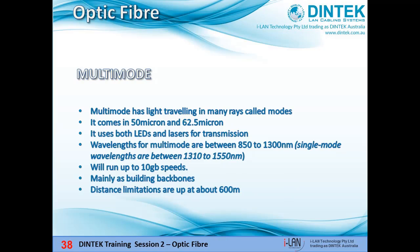Multi-mode fibre has light travelling in the core in many rays called modes — hence multi-mode. It has a bigger core than single-mode and is used with LED and laser light sources with shorter light wavelengths of between 850 and 1300 nanometres for slower local area networks — so it's not always lasers with optic fibre, LEDs are used as well. Multi-mode optical fibre is mostly used for communication over shorter distances, such as within a building or on a campus, with data rates of anything from 10 megabits per second up to 10 gigabits per second over link lengths of up to 600 metres.